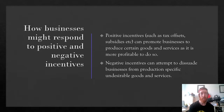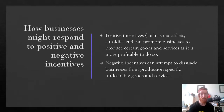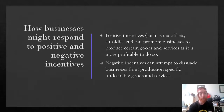Negative incentives can attempt to dissuade businesses from producing specific undesirable goods and services. Things like excise taxes are charged to producers of cigarettes, petrol, etc., to try to get them to produce less. Same with gambling — there are high taxes paid on gambling. The downside is that a lot of products with negative incentives placed on them are still highly profitable, so businesses still produce a lot of them.